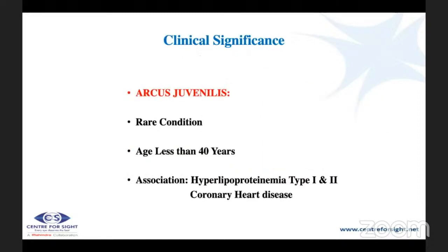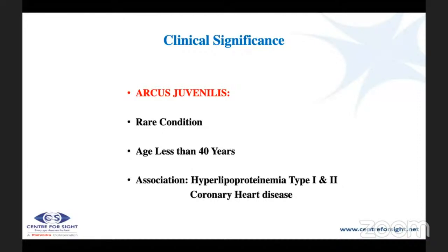If this degeneration happens before the age of 40 years, it is not a normal process and is called arcus juvenilis — a rare condition associated with hyperlipoproteinemia type one and two and coronary heart disease. When you find somebody less than 40 years with arcus juvenilis, it is very important to send that patient for systemic examination to rule out any life-threatening condition.